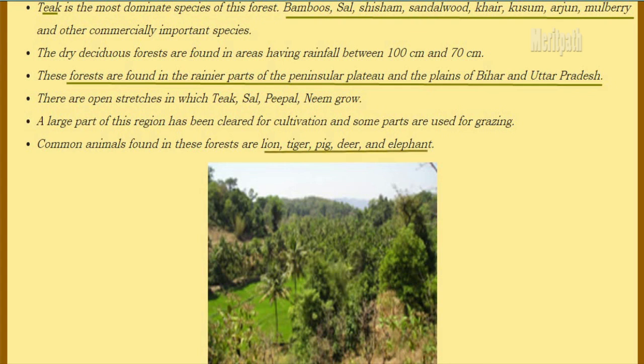Animals found in tropical deciduous forests are Lion, Tiger, Pig, Deer and Elephant. This image shows the tropical deciduous forest.